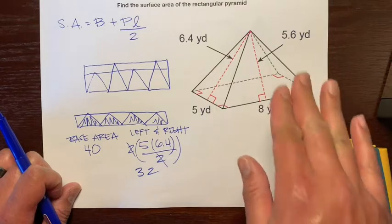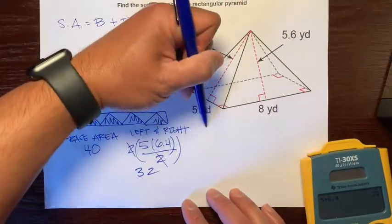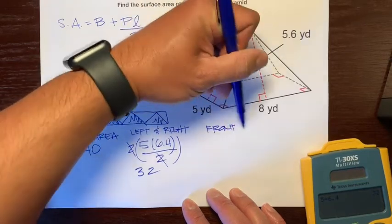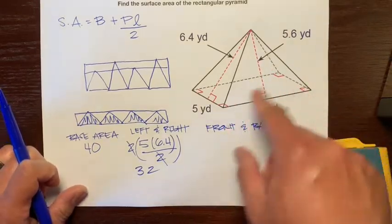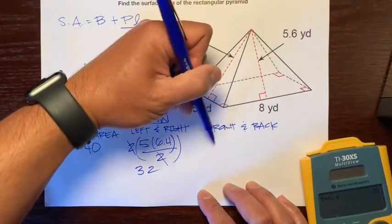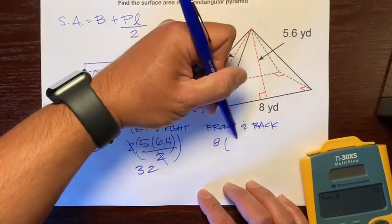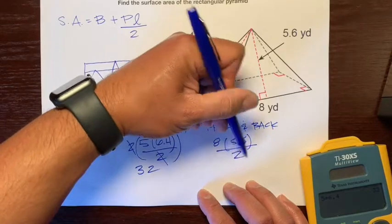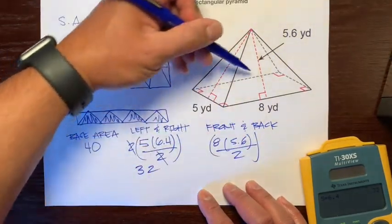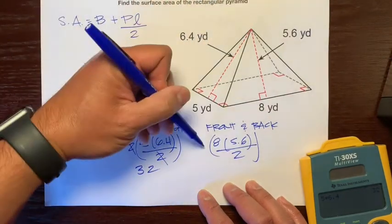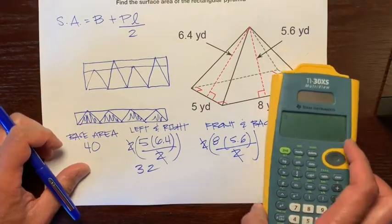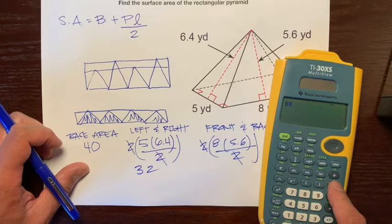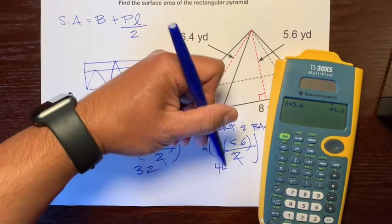Now let's find the area of the front triangle and the back triangle. The front is a triangle — base times height divided by 2 — so the base is 8, times 5.6, divided by 2. We want to multiply that by 2 for the back triangle as well. Let's cancel out these 2s and use our calculator: 8 times 5.6 is 44.8.